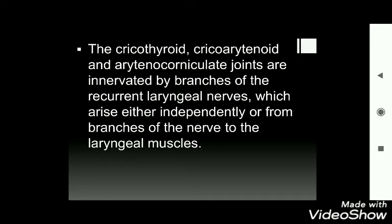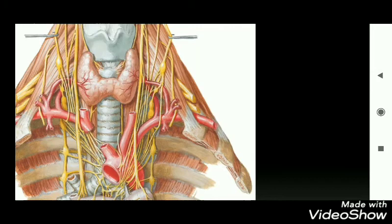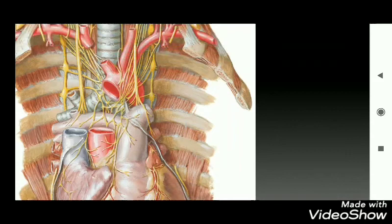The cricothyroid, cricoarytenoid, and arytenocorniculate joints are innervated and supplied by the recurrent laryngeal nerve, which arises either independently or from branches of the nerve to the laryngeal muscles. On the left side, the recurrent laryngeal nerve forms a loop around the arch of the aorta before extending upwards to supply the three joints.